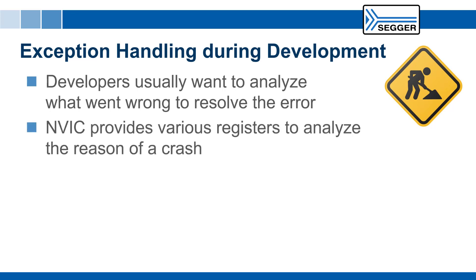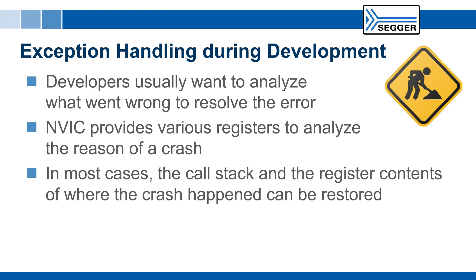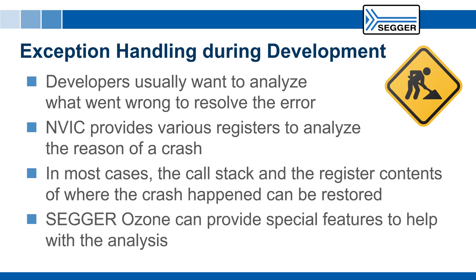The Cortex-M Nested Vectored Interrupt Controller or NVIC provides various registers to analyze the reasons of a crash. Additionally, in most cases, the call stack and the register contents of where the crash happened can be restored. A debugger like SEGGER Ozone can provide special features to help with the analysis. In this case, no special exception handler needs to be added to the code. The debugger simply breaks on a vector catch or breakpoint and does the analysis.